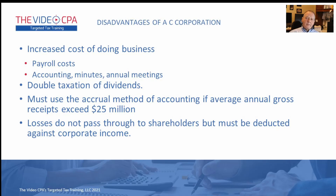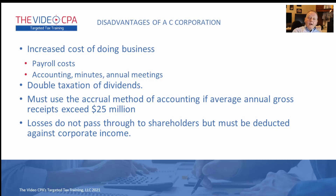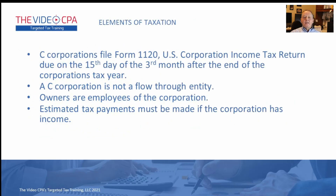A C corporation is not a pass-through entity like an S corporation. If you've got losses in the C corporation, you're not going to be able to pass them through to the shareholders the way you can with an S corporation. Those losses stay in the corporation and must be deducted against corporate income. They can be carried back or carried forward, but they have to be applied against corporate income.